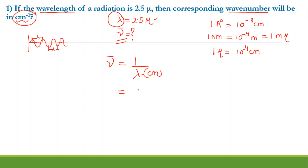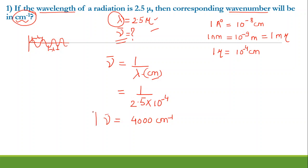Now if I substitute the value of the wavelength — it is 2.5 mu — I need to convert it into centimeter. So I will simply write 10 to the power minus 4 here, and that is going to give me the answer which is 4000 centimeter inverse. So for this particular EMR the wave number is 4000 centimeter inverse, provided the wavelength is 2.5 mu.